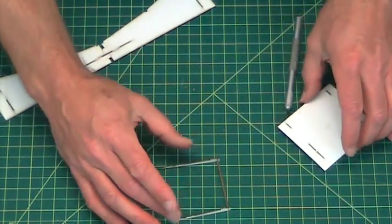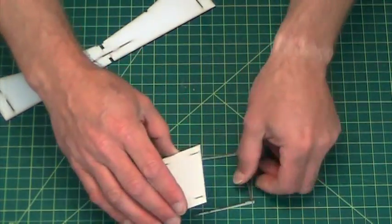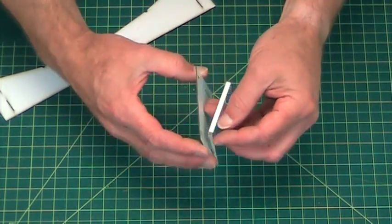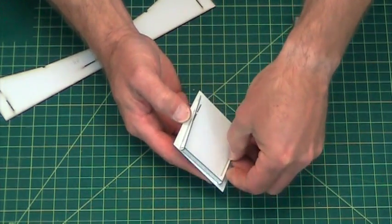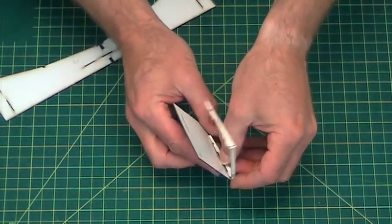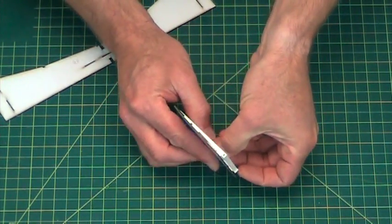And then we're going to take this piece, and it'll only go on one way because of the tabs. And so we'll just turn it around. Push those tabs into the little slots on the cardstock.